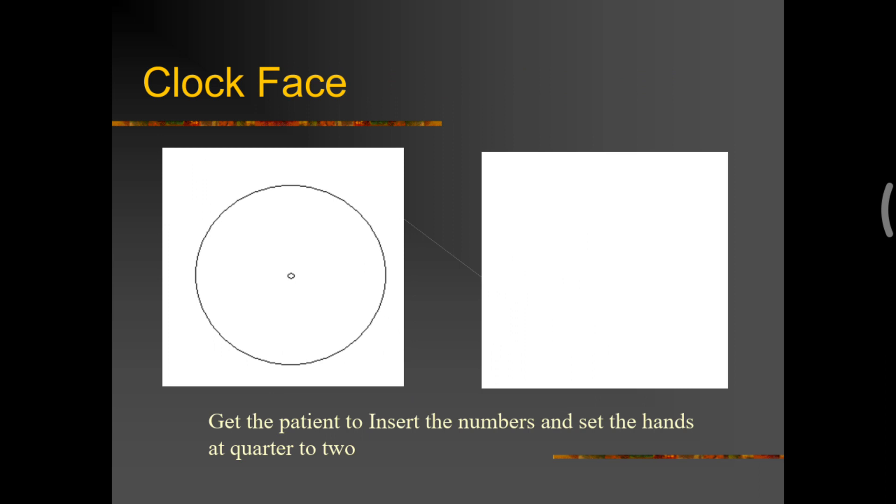A last pen and paper test could be a clock face test. So, in this, we ask the person to write the numbers 1 to 12. In this, if he is not having a neglect, it would be equally distributed. If he is having a neglect, all the numbers from 1 to 12 would actually come within the one half of this clock.